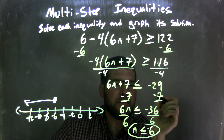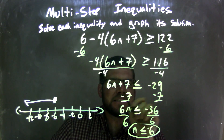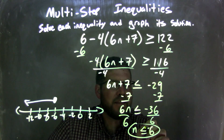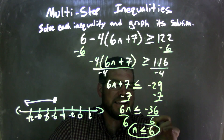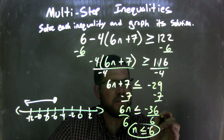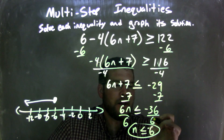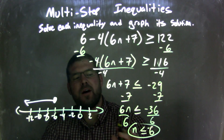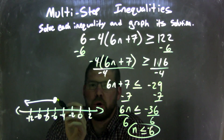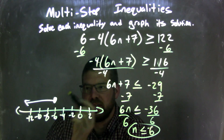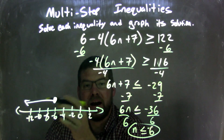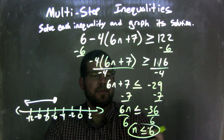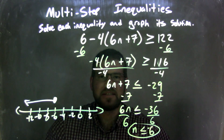I then subtracted 7 from both sides, giving me negative 36 on the right, and then divided by 6 on both sides, giving me n by itself on the left — less than or equal to negative 36 divided by 6, which is negative 6, not positive 6. A negative divided by a positive is a negative. So n is less than or equal to negative 6. I graphed it with a closed circle because it's equal to negative 6, and shaded to the left because n is less than negative 6. This graph matches our final answer: n is less than or equal to negative 6.